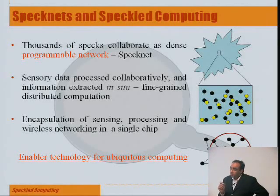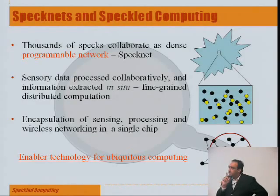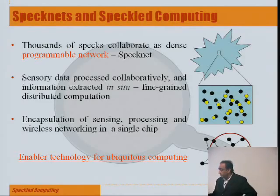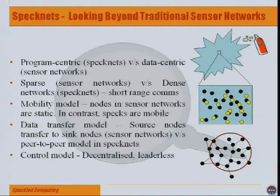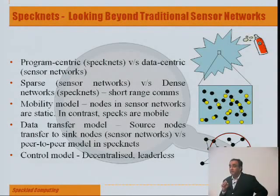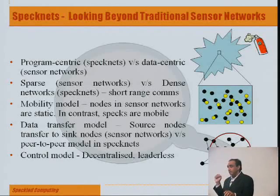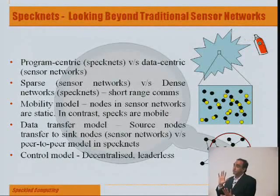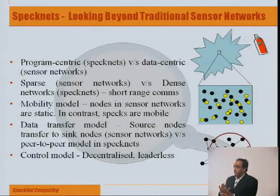Where size matters, we want to be able to address classes of problems where you couldn't reach computation, sensing, or wireless networking. This opens up entirely new classes of problems. Traditional sensor networks tend to be data-centric — you sense data, transmit it to a central host where all processing takes place. Whereas what we want to be is more program-centric, where the behavior which runs on a central host in traditional sensor networks actually runs on the devices themselves.